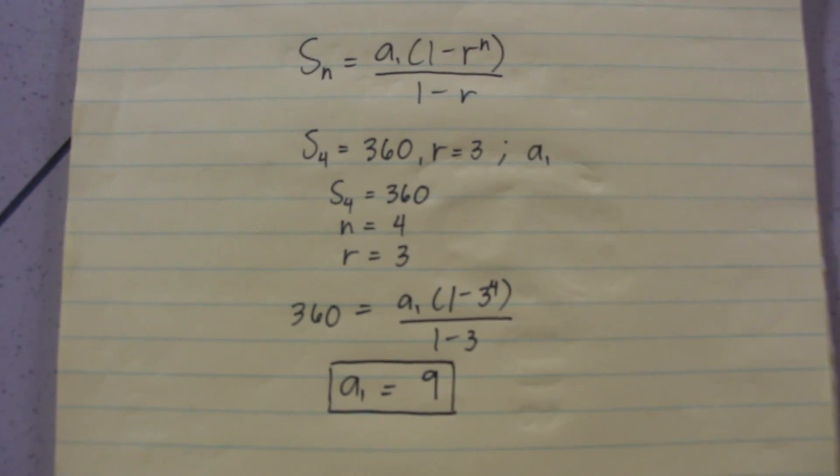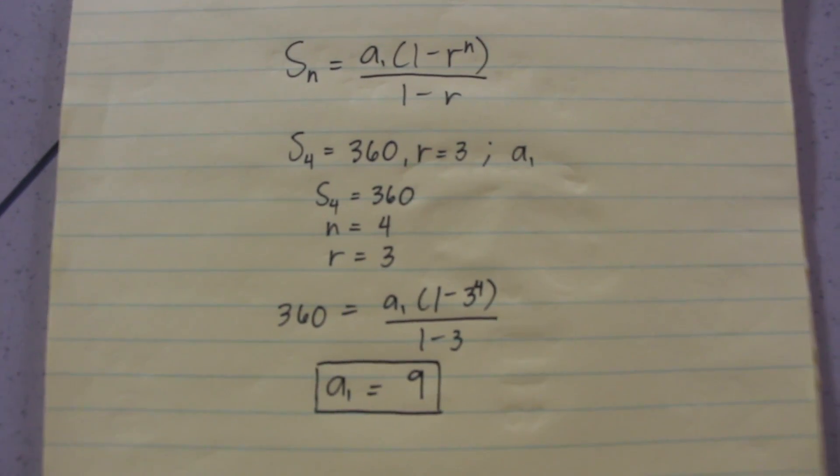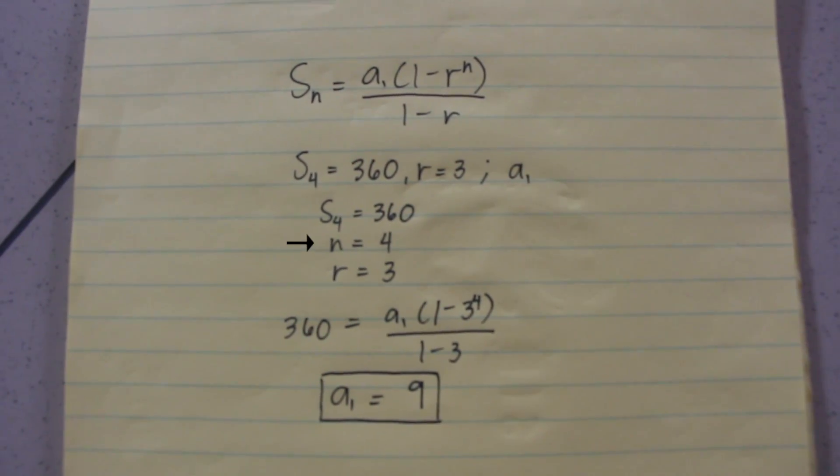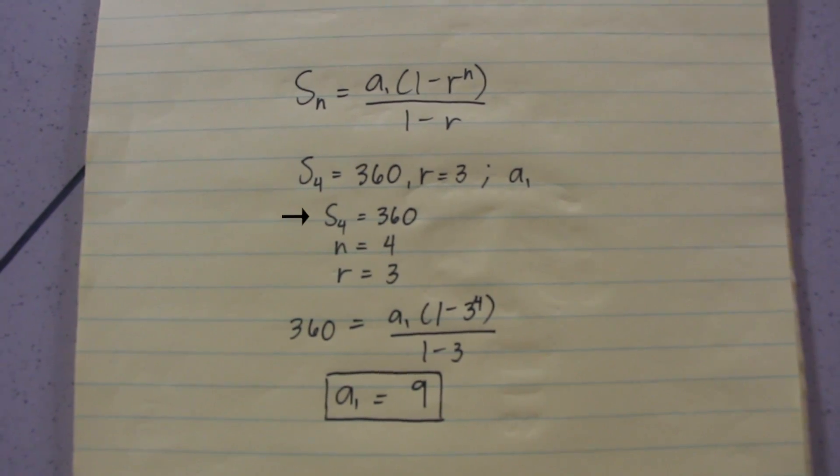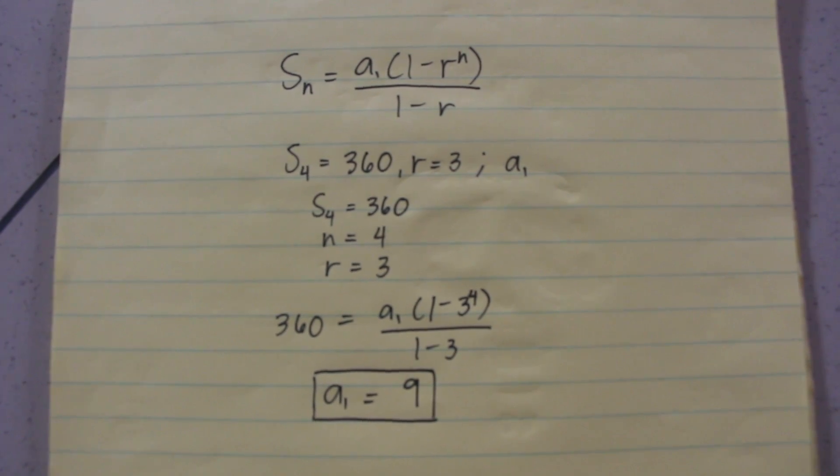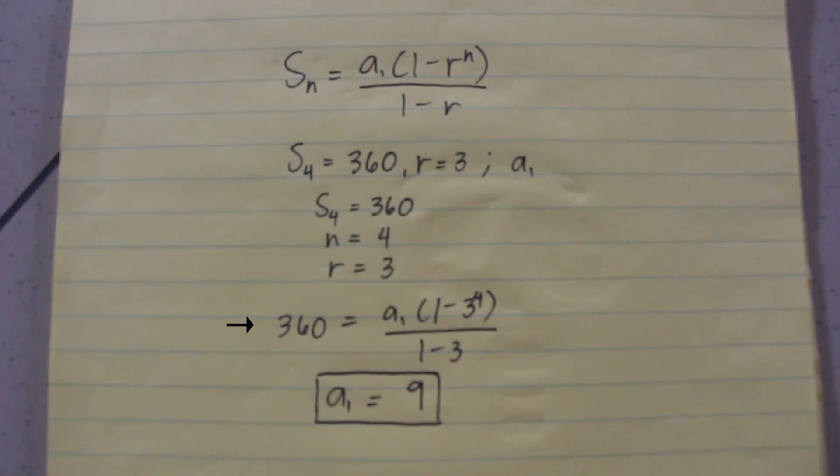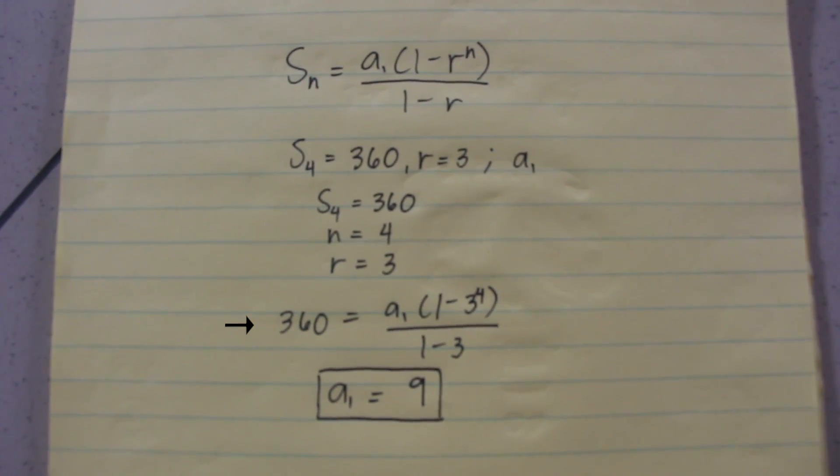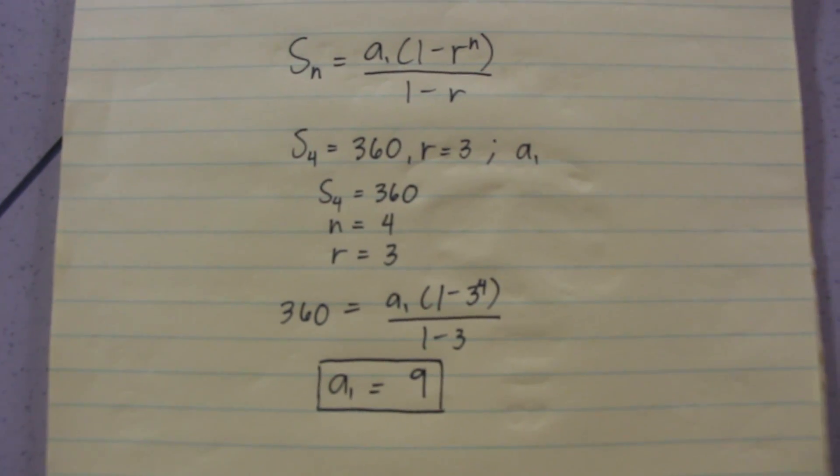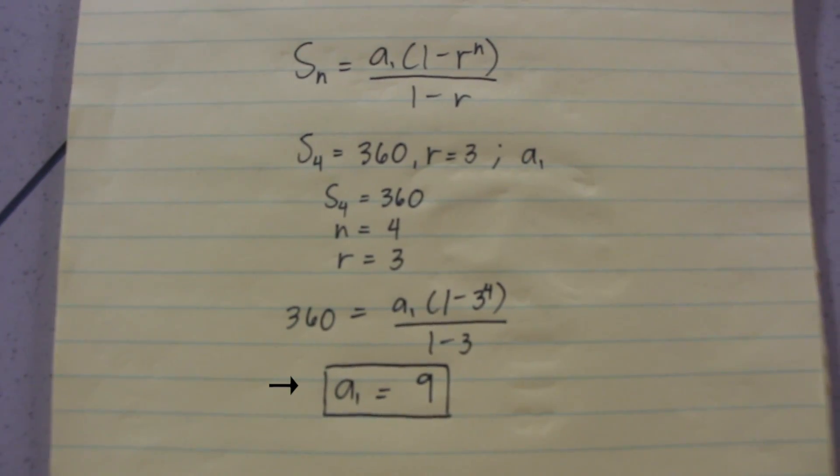As we need a sub 1, we need S sub n, n, and r. From our given, it is clear that for an instance where n is 4, S sub n is 360, and r is 3. Plugging in these values to the formula, we get an equation of 360 is equal to a sub 1 quantity 1 minus 3 to the 4 over 1 minus 3. Solving for a sub 1, we get 9. Thus, 9 is the first term of the geometric sequence.